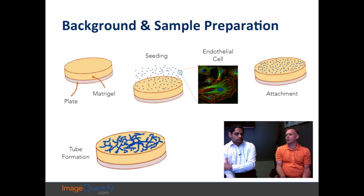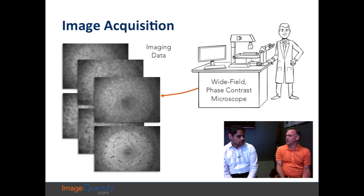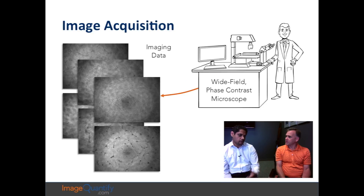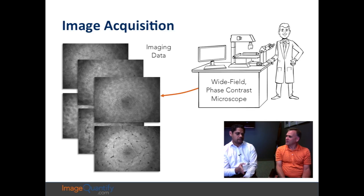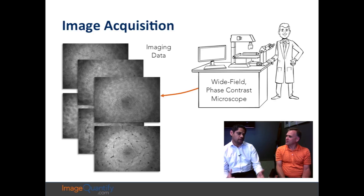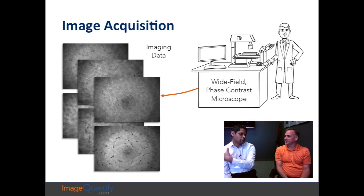When you do the assay and look at the matrix that's formed, what are researchers trying to conclude? Essentially they're trying to see how connected the structures are within the well. You have these in a number of wells and you add your drug — whether it's an inhibitor or a stimulator for angiogenesis — and then you'll see these connections happen. Usually there's a set period of time where you're looking at these and comparing to a control to see whether it's more or less. Generally they're scoring them from zero to five, and it's a pretty arbitrary scale — a five for you might be different from a five for another lab.